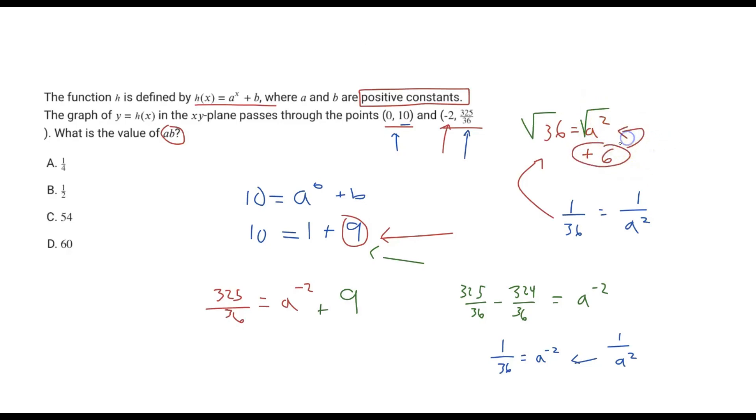Positive 6 here is our answer for a, but the question is asking for the product of a and b. We know here that b is a value of positive 9 and a is a value of positive 6. So 9 times 6 is going to give us a value of 54, and therefore C is going to be our final answer.